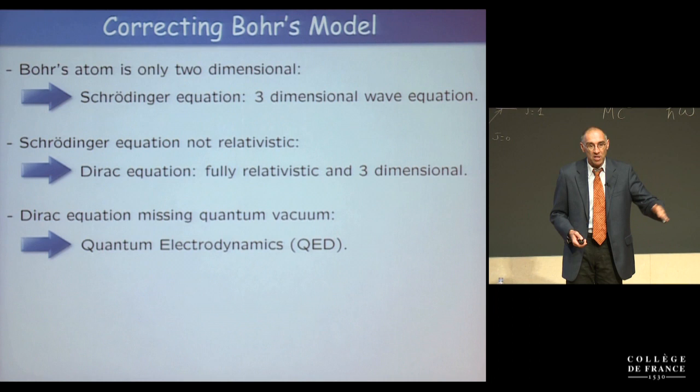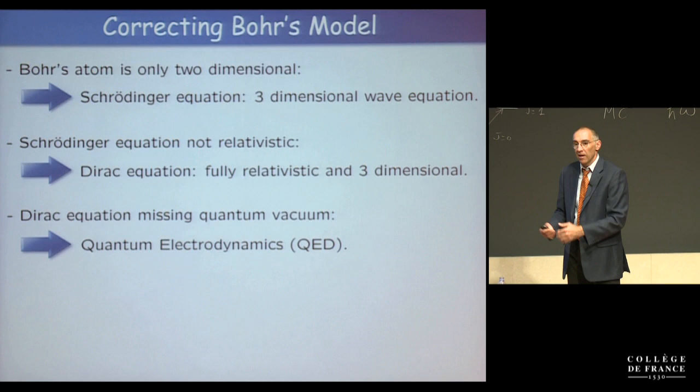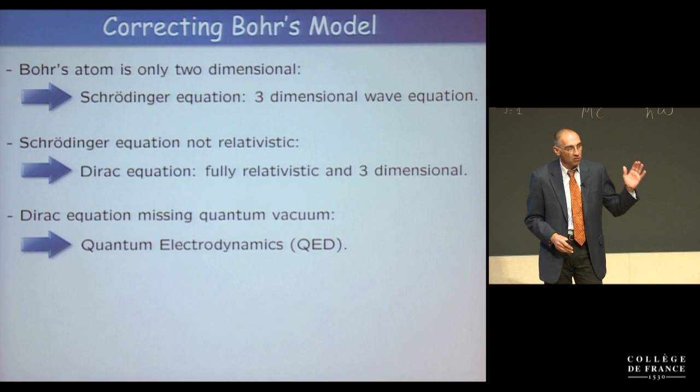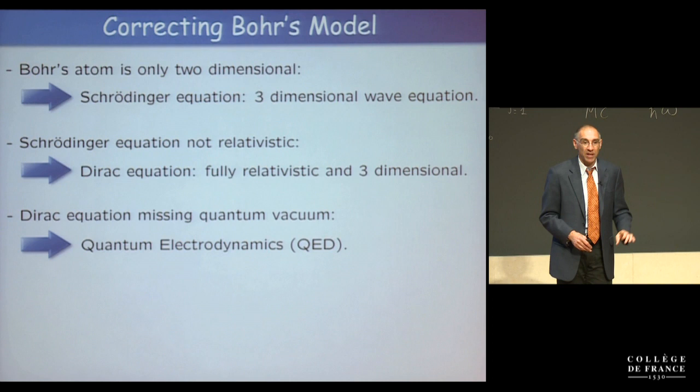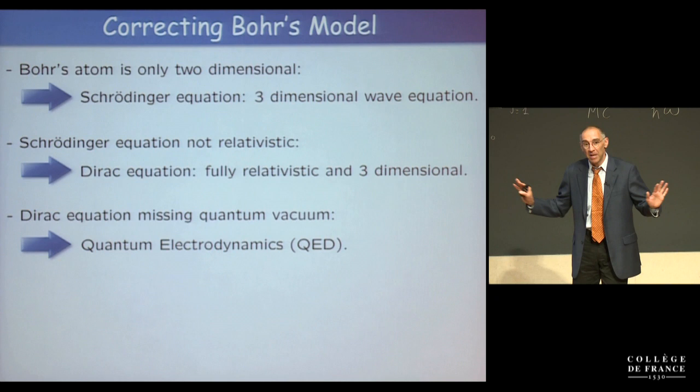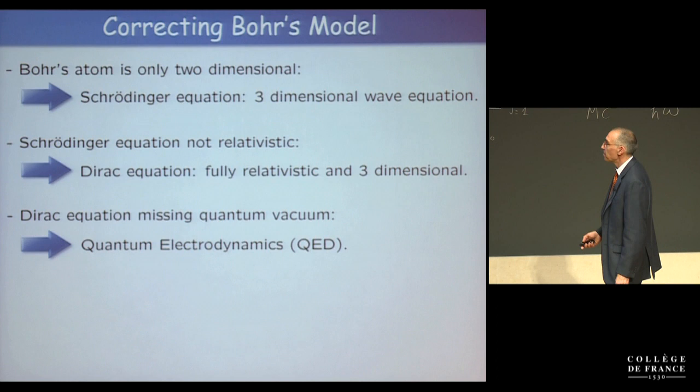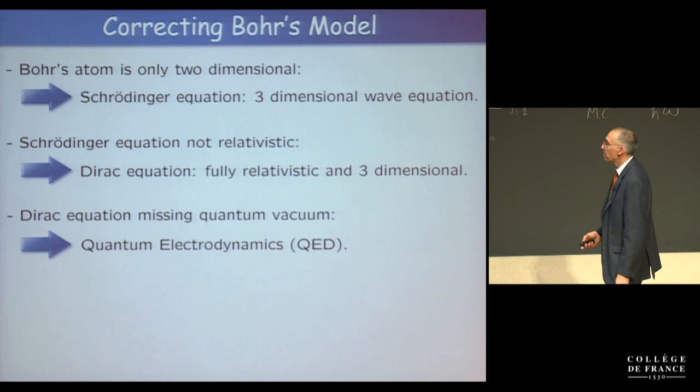Since we have QED, we can measure and calculate six orders of magnitude more accurately, and the theory hasn't changed. Maybe that's the end of the story — maybe it isn't. At the moment there is actually some discrepancy, and that's what I'm going to talk about. For that I need to mention a few more things that are missing even in this QED description when applied to the hydrogen atom.